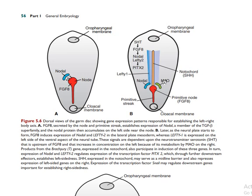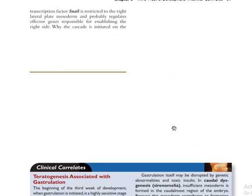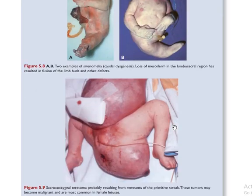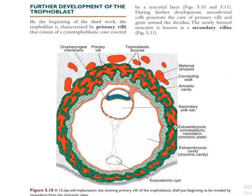On the right side, monoamine oxidase (MAO) enzyme is present. This enzyme decreases serotonin on the right side, declining this pathway. The MAO on the right side degrades serotonin, which cancels the left-side pathway and establishes the right side of the body.